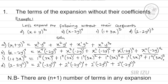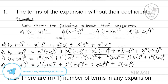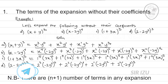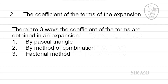That's about getting the terms of any expansion without their coefficients. But these expansions are not complete because we are yet to add their coefficients — and that brings us to the second topic: the coefficients of any term in an expansion. There are three ways coefficients are obtained: by Pascal's triangle, by the method of combination, and by the factorial method.